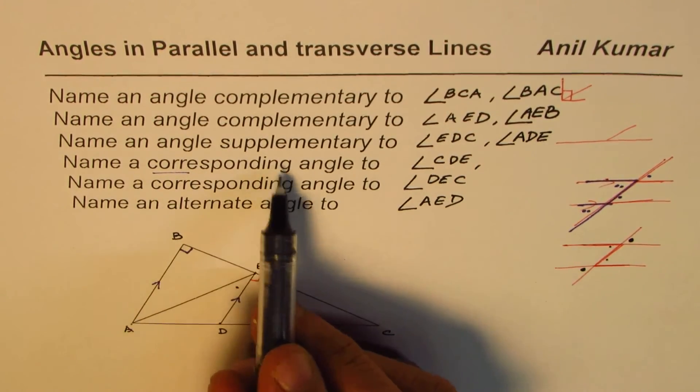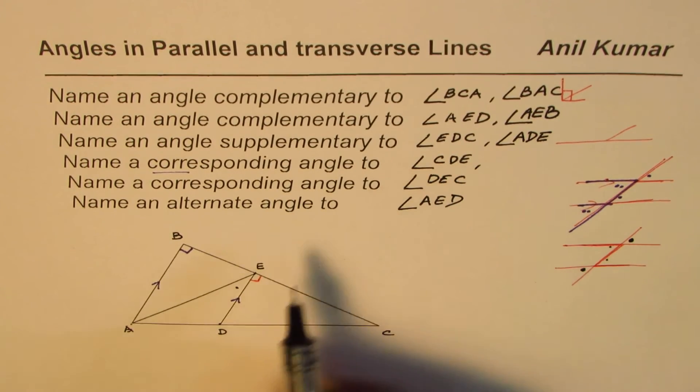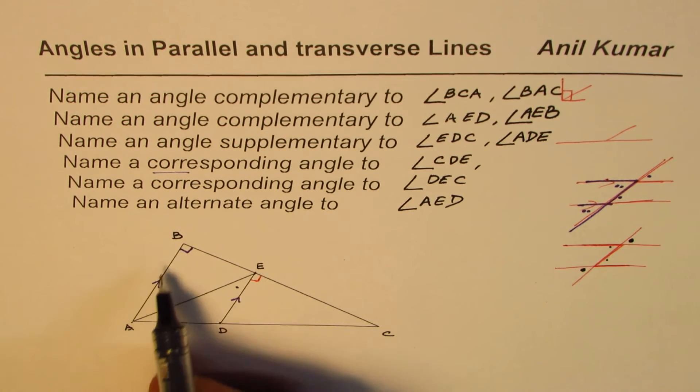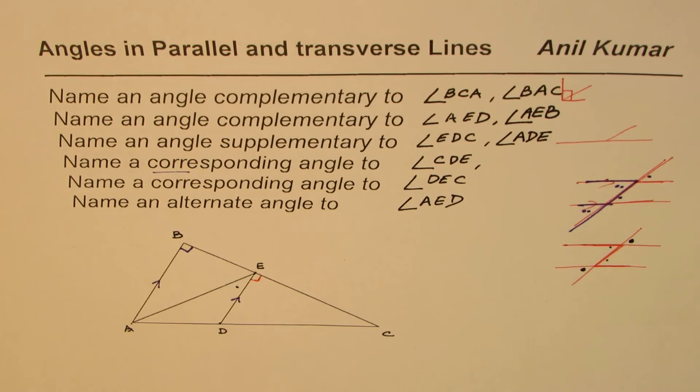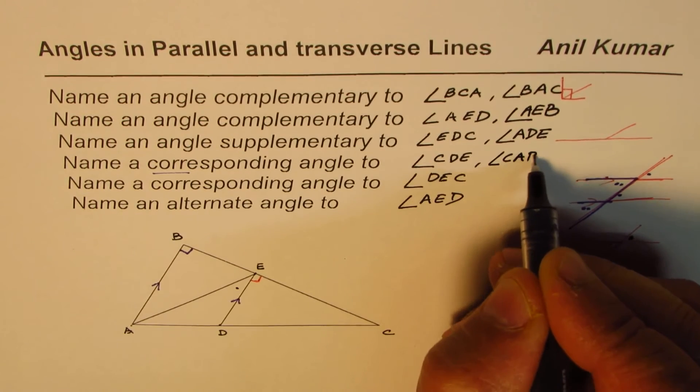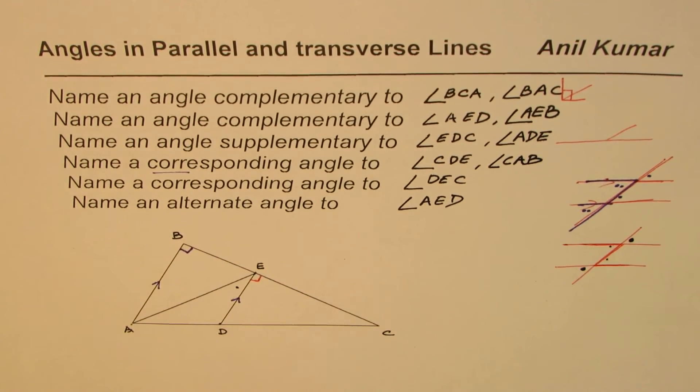CDE, we want corresponding angle, that means F pattern. CDE, CDE right. So just go further ahead, so you get CAB. CDE, that should work correct. So CAB. So CDE and angle CAB correct, that becomes corresponding angle.